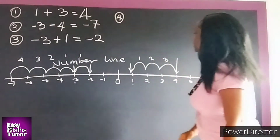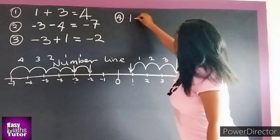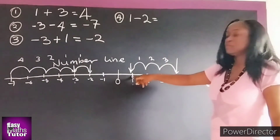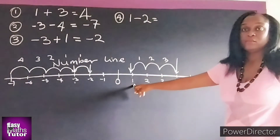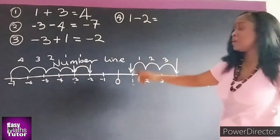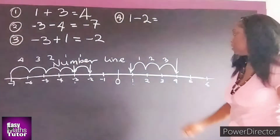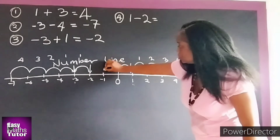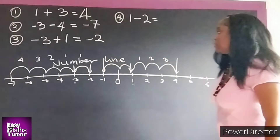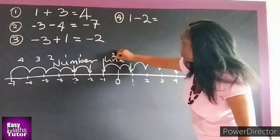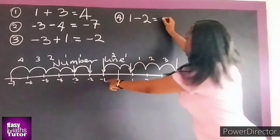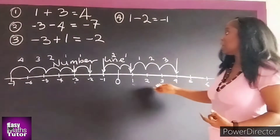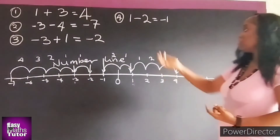Let's try problem four: one minus two. We jump to positive one on the number line. Since it's minus two, we go to the right and count two times — one, two — backwards. We land on minus one. So one minus two gives us minus one.